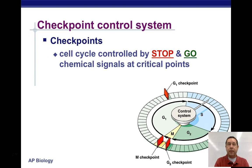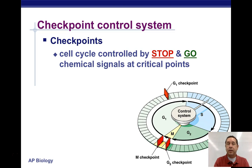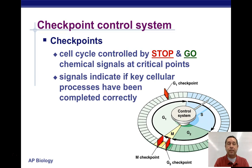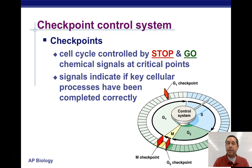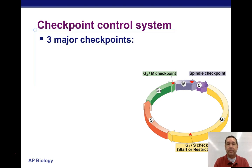At these checkpoints, there are chemical signals produced by the cell to either stop or allow it to go on. Those signals are only produced when things need to stop or when we're ready to move on — different signals are going to be produced. If the signal indicates that the required processes have been completed correctly, then it's going to be a go signal. Otherwise, it'll stop.